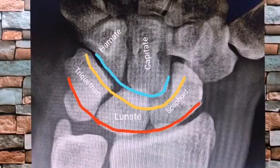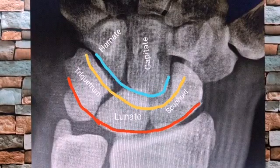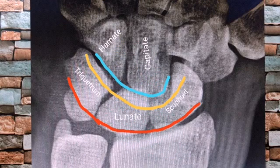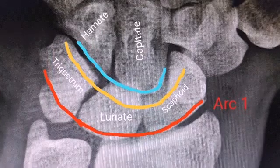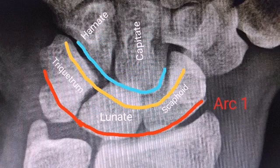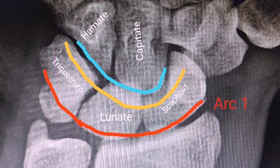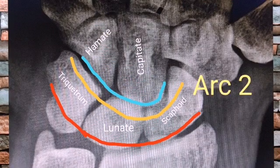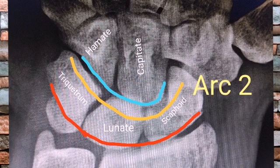Normal carpal joint seen on anterior-posterior view has three Gilula's carpal arcs. Arc 1 is a smooth curve around the proximal convexities of scaphoid, lunate, and triquetrum bones. Arc 2 is a smooth curve around the distal concave surfaces of scaphoid,